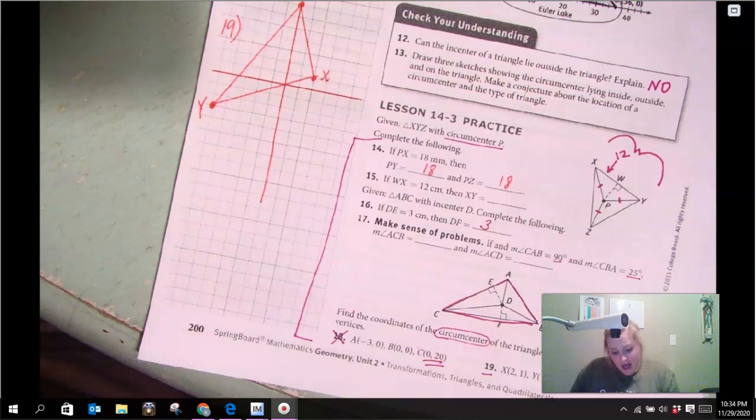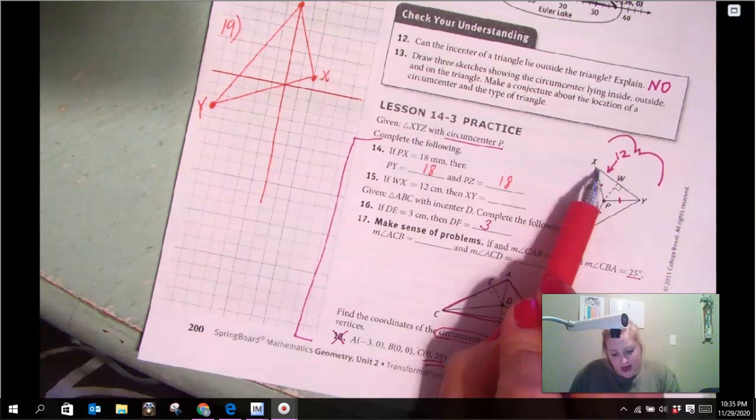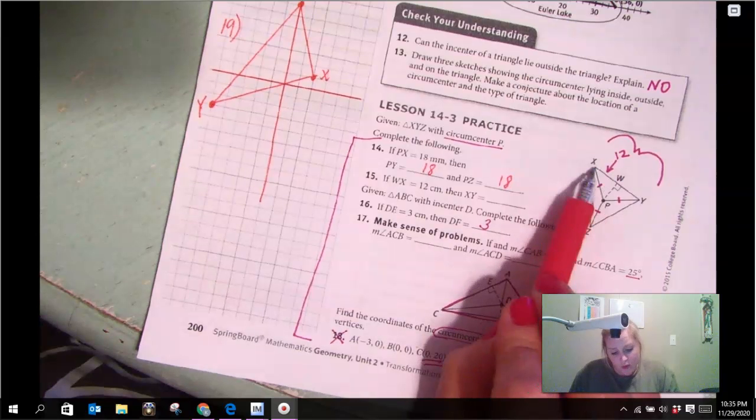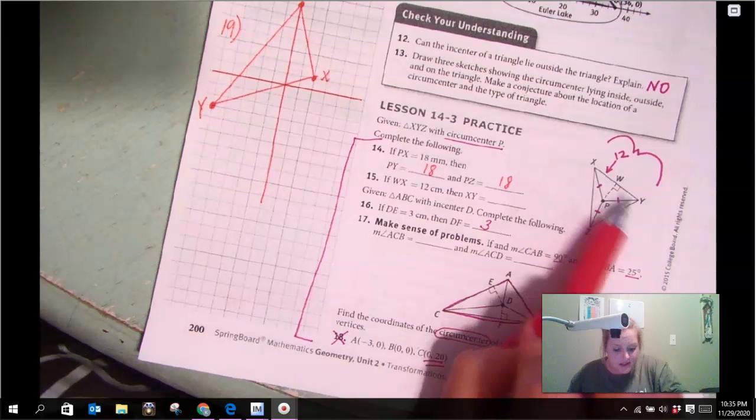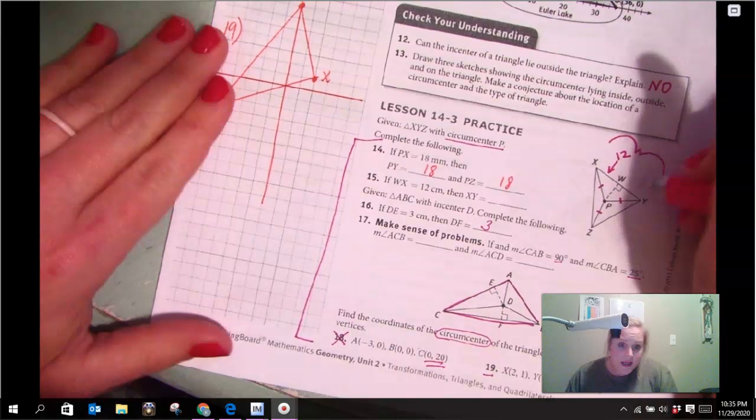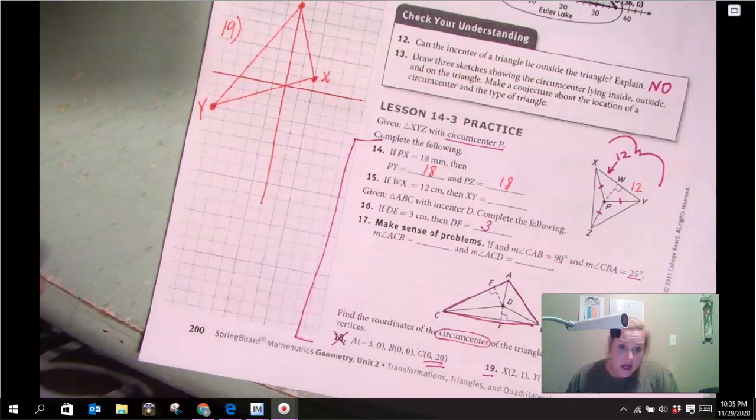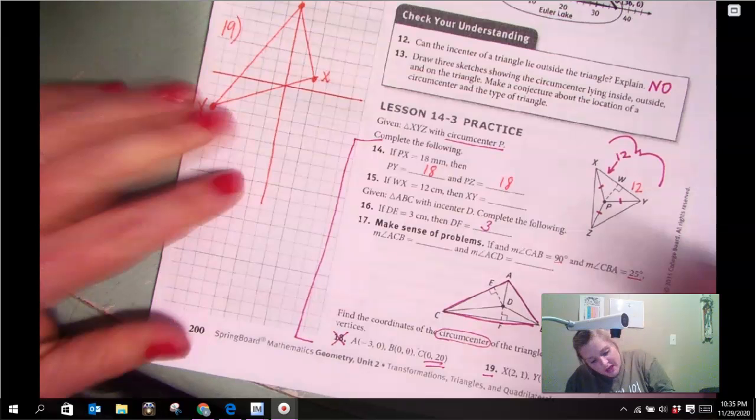And then WX is 12, so they want to know what's the entire thing. Well, if this is 12, then this is 12 because W is the midpoint. Therefore, the whole thing is 24.